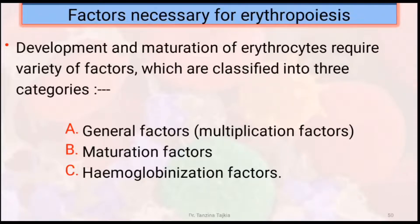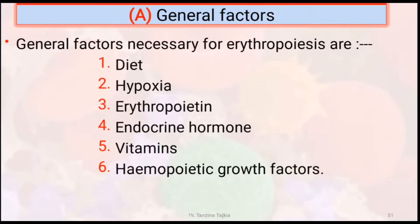First of all, general factor. Secondly, maturation factor. Lastly, hemoglobinization factor. Under general factors, diet, hypoxia, erythropoietin, endocrine hormone, vitamins, and erythropoietic growth factor are subdivided.